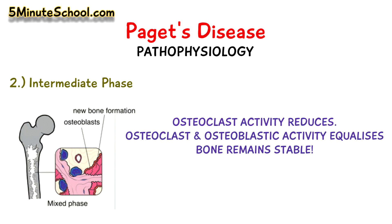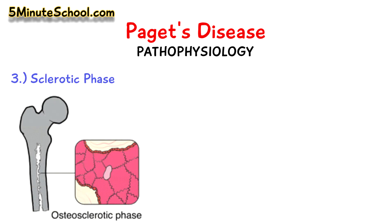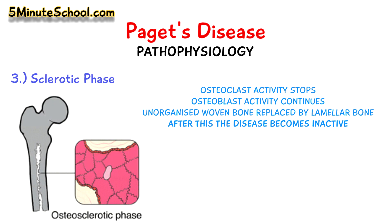Then we have the intermediate phase where osteoclast activity reduces to reach a point where osteoclast and osteoblast activity equalise and the bone remains stable. We then have the sclerotic or blastic phase where osteoclastic activity stops and osteoblast activity continues. Here the unorganised woven bone is replaced by lamellar bone. After this the disease becomes inactive.